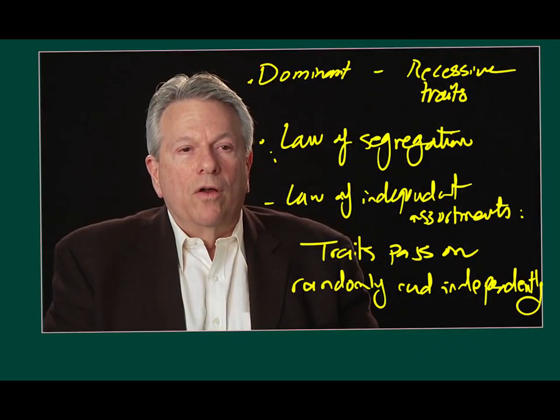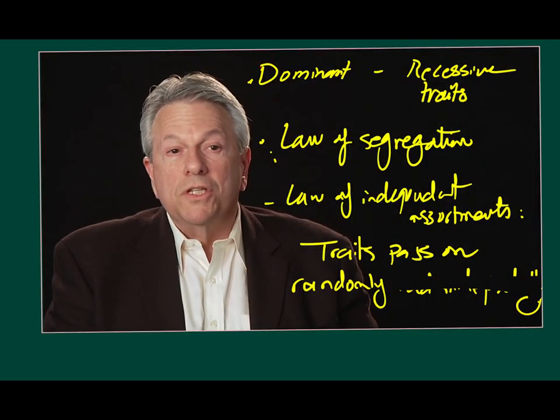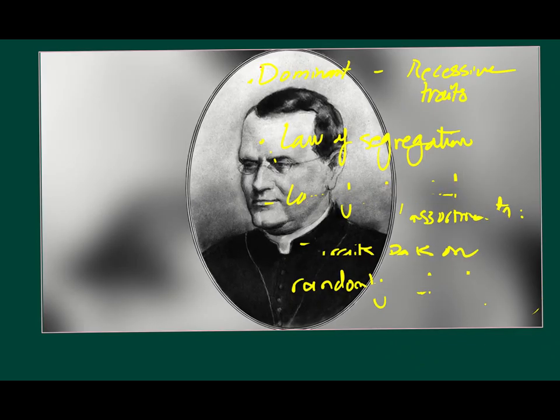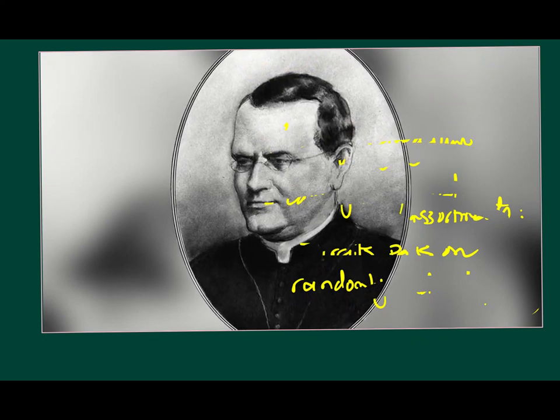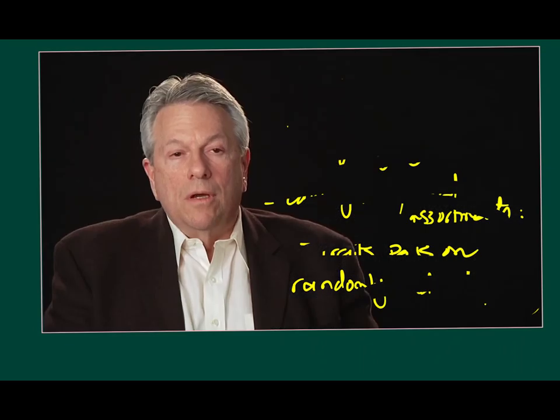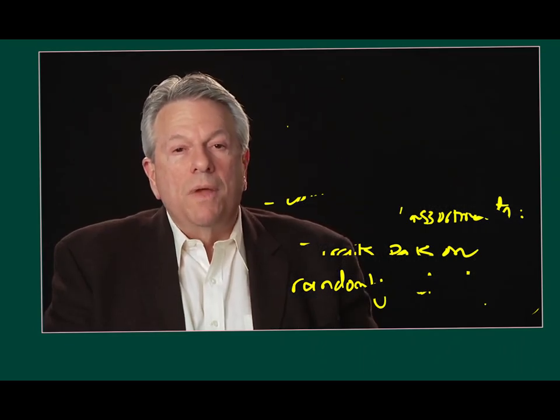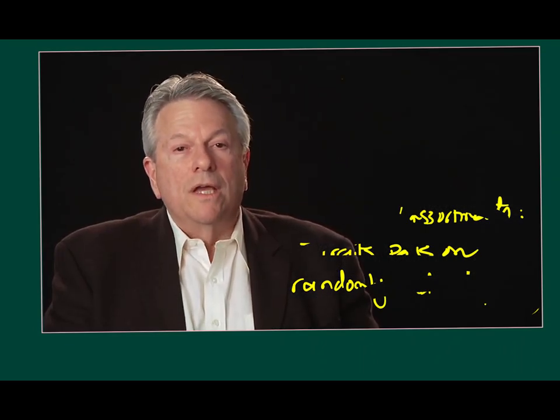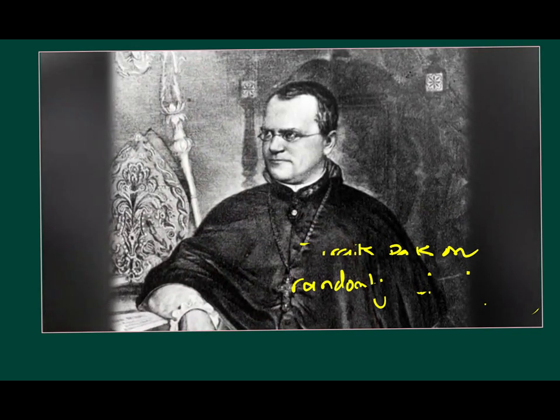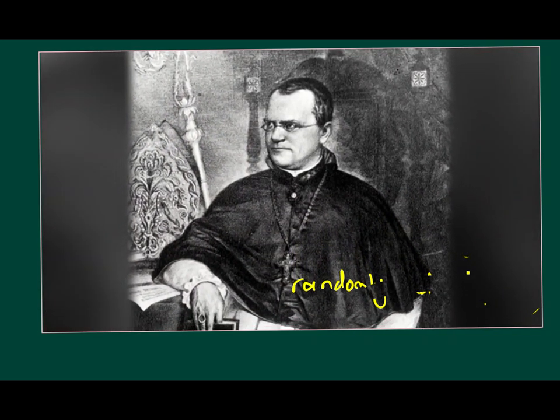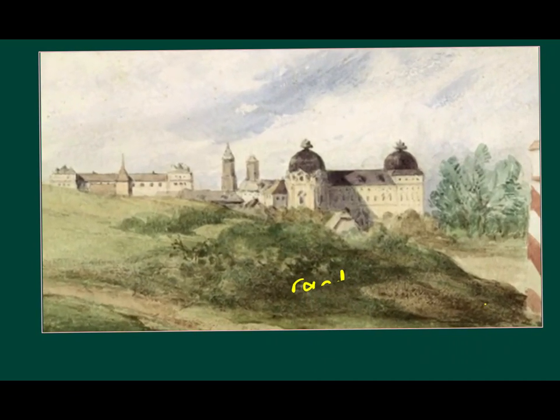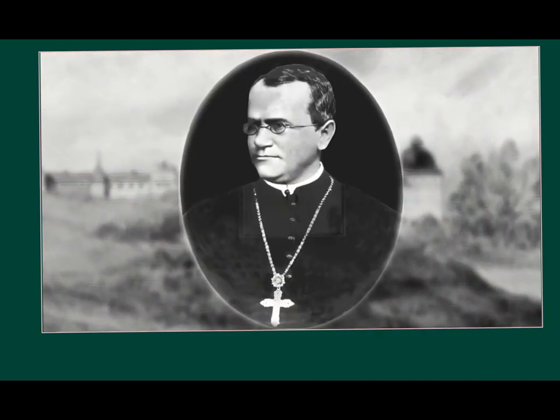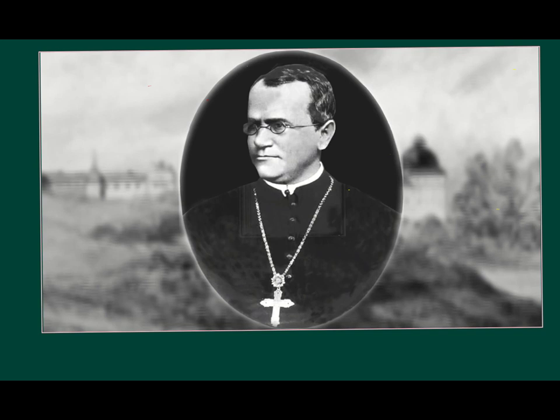During his life, Gregor Mendel's research was disregarded by almost everyone. It wasn't until the early 1900s after his death that Mendel's work was appreciated and now serves as the basis for genetics and heredity. In his later years, Mendel became the abbot of his monastery and spent less time with his scientific endeavors. Gregor Mendel died in 1884 at the age of 62.